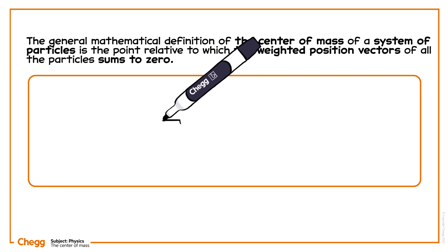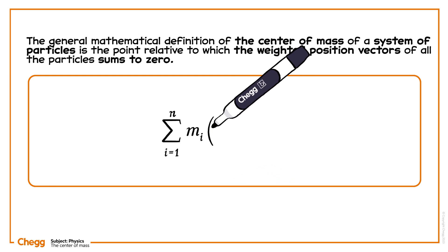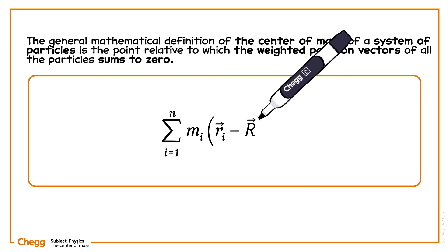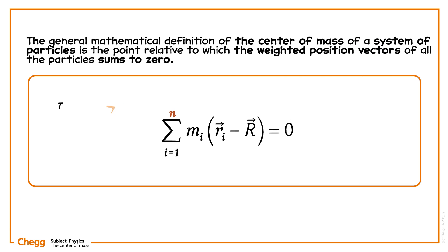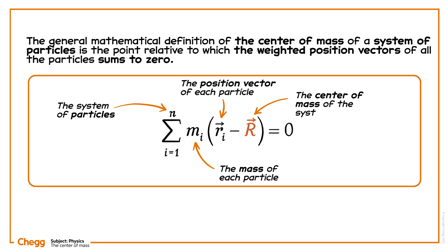Mathematically, the sum of the product of m_i and the difference of vector r_i and vector r, going from i equals 1 to n, equals zero. Here, m_i represents the mass of each particle in the system of n particles, vector r_i is the position vector of each particle, and vector r represents the centre of mass of the system.